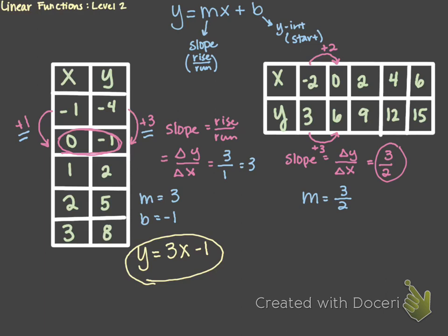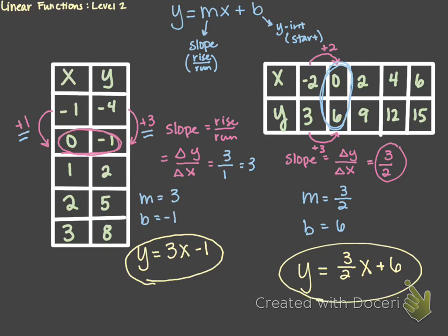Now to find our b value, we're going to look for the starting value of our graph, or when x equals 0. When x equals 0, y equals 6, which means our starting value — our y-intercept — is going to be 6. To write this equation, we plug in 3 halves and 6 into our m and b values. We get y equals 3 halves x — don't forget that x, that's really important — plus 6. So there we have our slope-intercept form equation given a table.